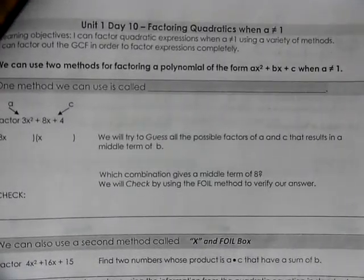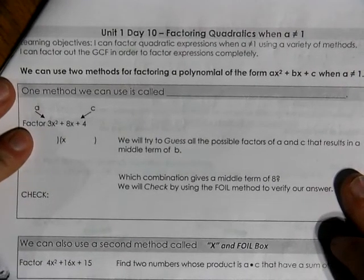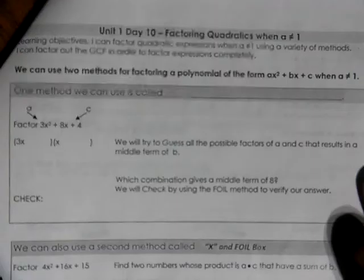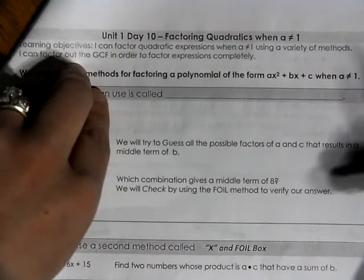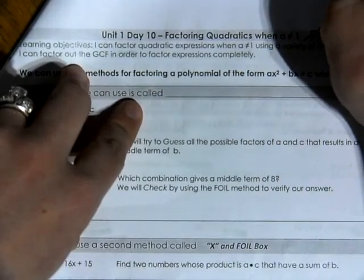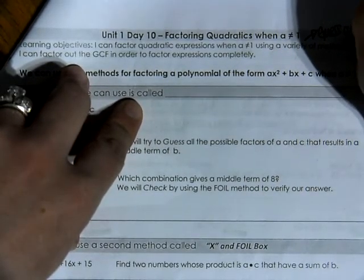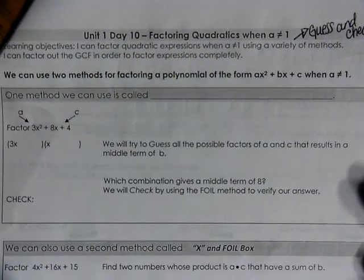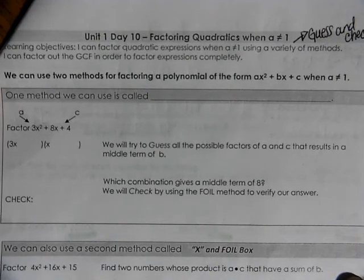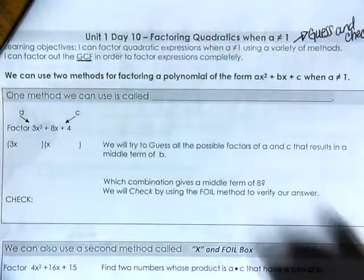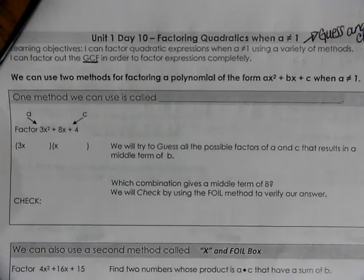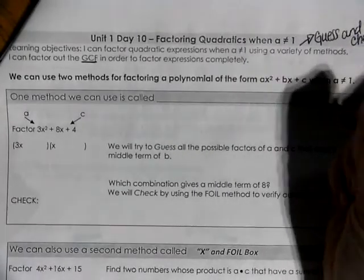Hi everyone, for today's lesson we are going to learn how to factor quadratics whenever a is not equal to one. Our learning objectives for today: I can factor quadratic expressions when a does not equal one using a variety of methods. The method I want you to focus on is guess and check. I can also factor out a GCF, which stands for greatest common factor, in order to factor expressions completely.